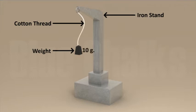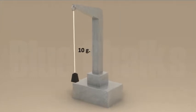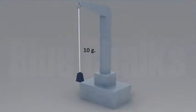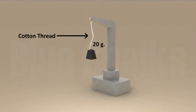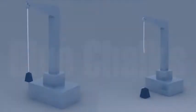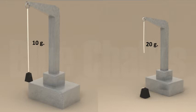Add weights one by one till the thread breaks. Note down the total weight required to break the thread. This weight indicates the strength of the fiber.